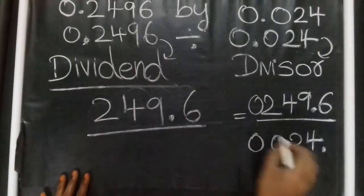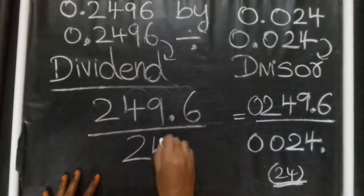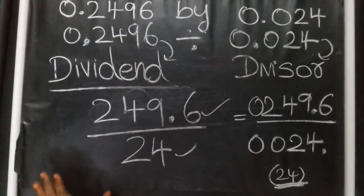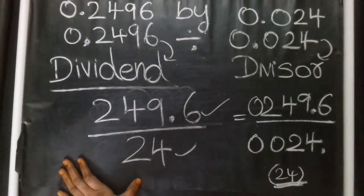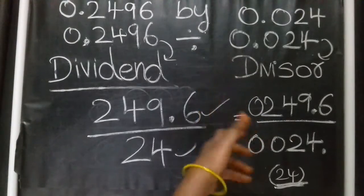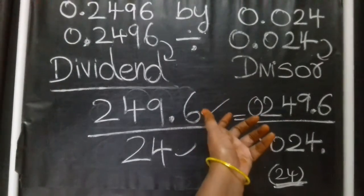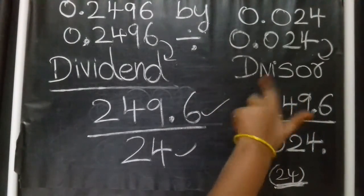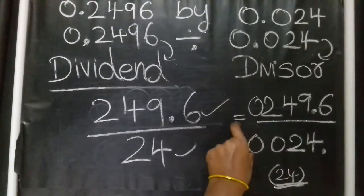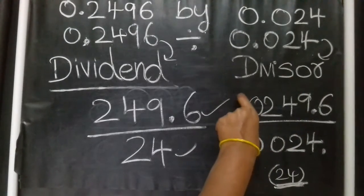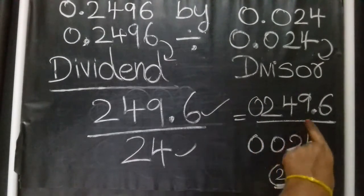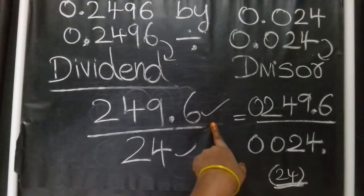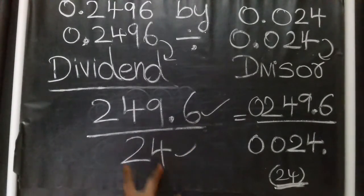Your new divisor is 24. So this is the new question. The steps are easy to get started — convert the divisor to a natural number by moving the decimal point three steps. The divisor is now a natural number. Same three steps are applied. So the new divisor is 24.